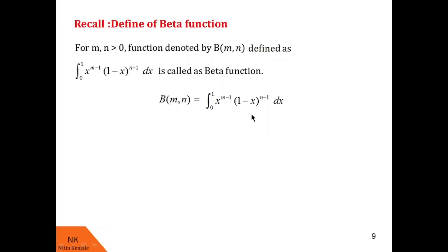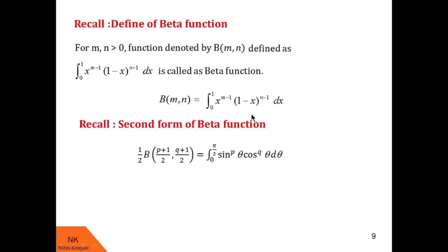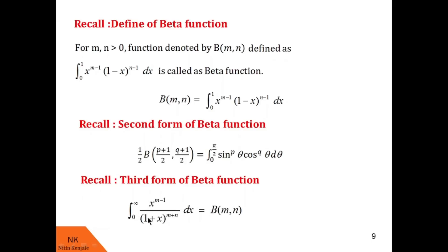If we substitute x equal to sin² θ in this form, we get the second form of the beta function: the integral of sin^p θ · cos^q θ dθ over the limit 0 to π/2 equals half · beta((p+1)/2, (q+1)/2). Similarly, the third form of the beta function is given by the integral of x^(m−1) upon (1+x)^(m+n) dx over the limit 0 to infinity. In this session we will see examples using the second form as well as the third form.